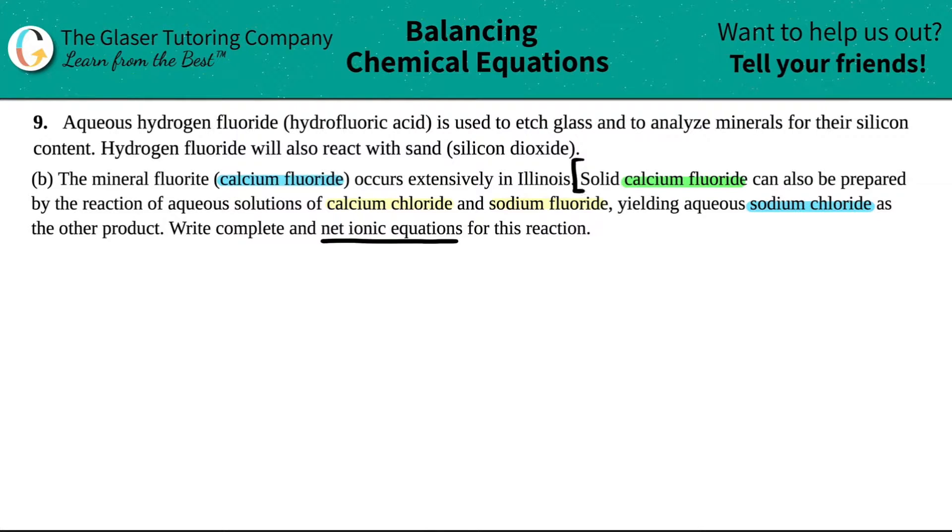So the first thing is that I'm just going to write my regular balanced equation. Now, if I just read through this again, it said that solid calcium fluoride can be prepared. Another word for prepare is made. If you prepare something, you made it, you formed it. So calcium fluoride was made. And if you make something, you are a product.